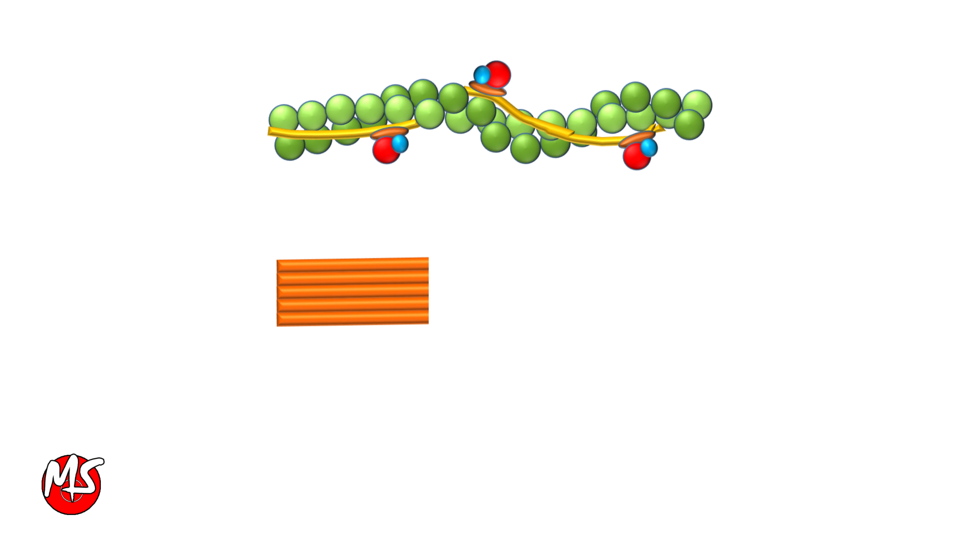Thick filament consists of myosin molecules. Myosin molecule consists of light and heavy chains. The light chains combine with the terminal part of heavy chain to form the head of the myosin molecule. The myosin head is at high energy in the relaxed state due to ADP and inorganic phosphate.